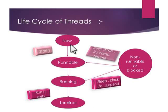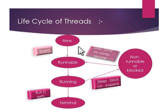Thread lifecycle: in the lifecycle, the first state is the new state. Any process is initialized in the new state. In the new state, start method is invoked automatically and the process goes to the runnable state. Further, this process goes to the running state.